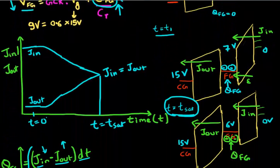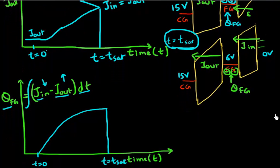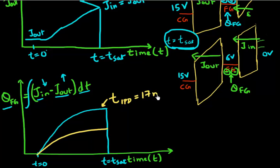So remember I said I need a thicker interpoly dielectric as compared to the tunnel dielectric. So what if I had a thinner dielectric? If I had a thinner IPD, so let's say this curve is for IPD thickness of let's say 17 nanometer.